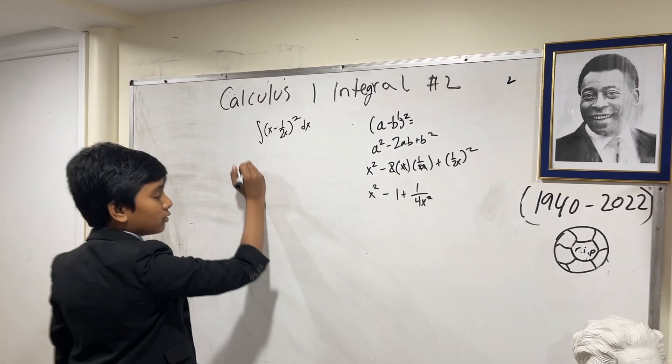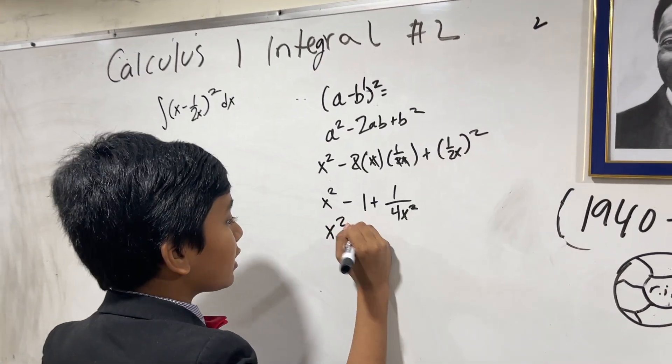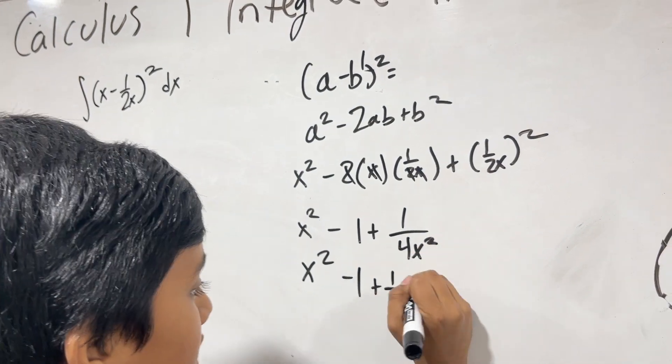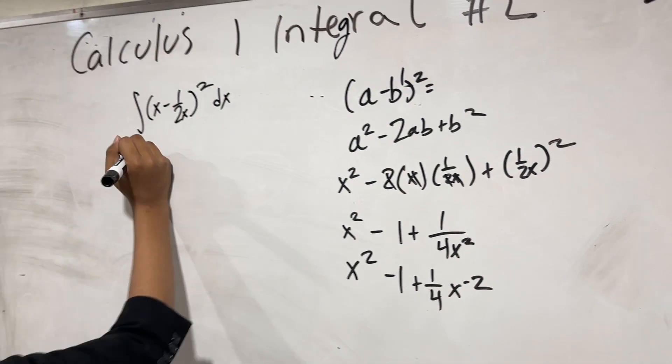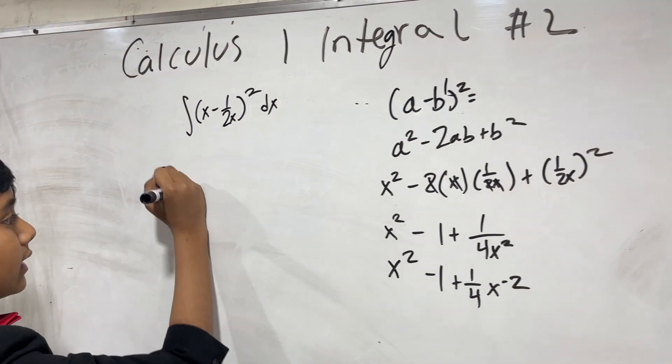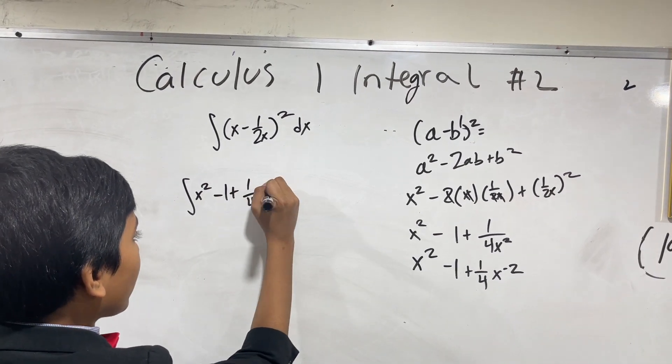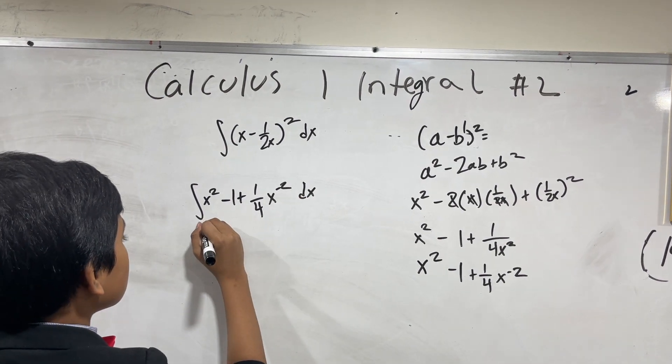We can actually make it better by making this x squared minus 1 plus 1 over 4, and we bring this up, x to the minus 2. So we get the integral of x squared minus 1 plus 1 over 4x to the minus 2 dx.